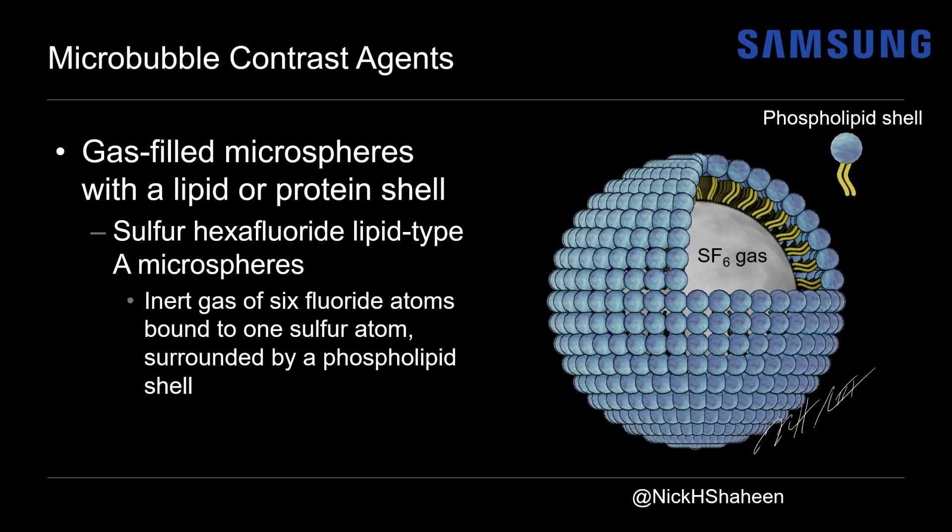Phospholipids have a hydrophilic negatively charged phosphate group polar head and hydrophobic nonpolar fatty acid tails — just when you thought you escaped high school biology. Thank you to Dr. Nick Shaheen for providing this fabulous diagram. You can check out some more of his work on Instagram at nickhshaheen.